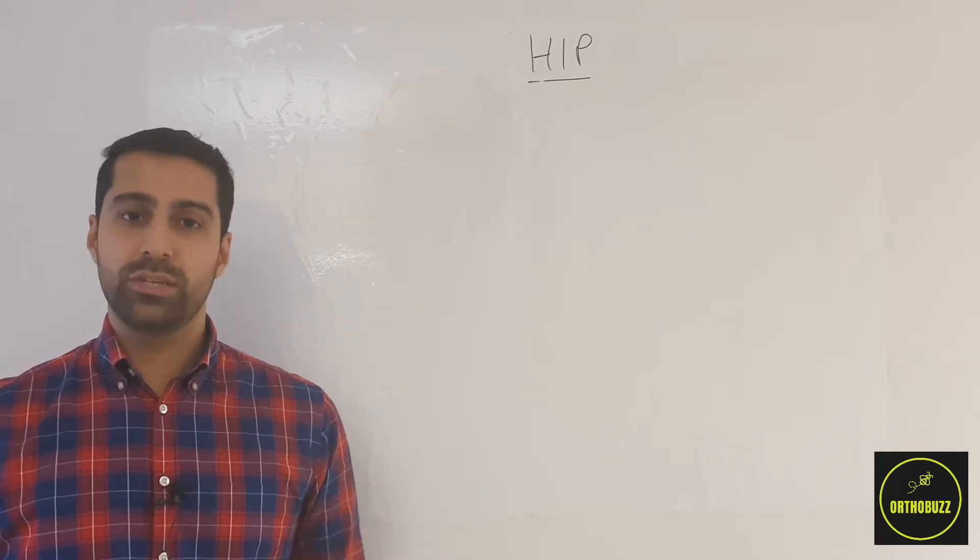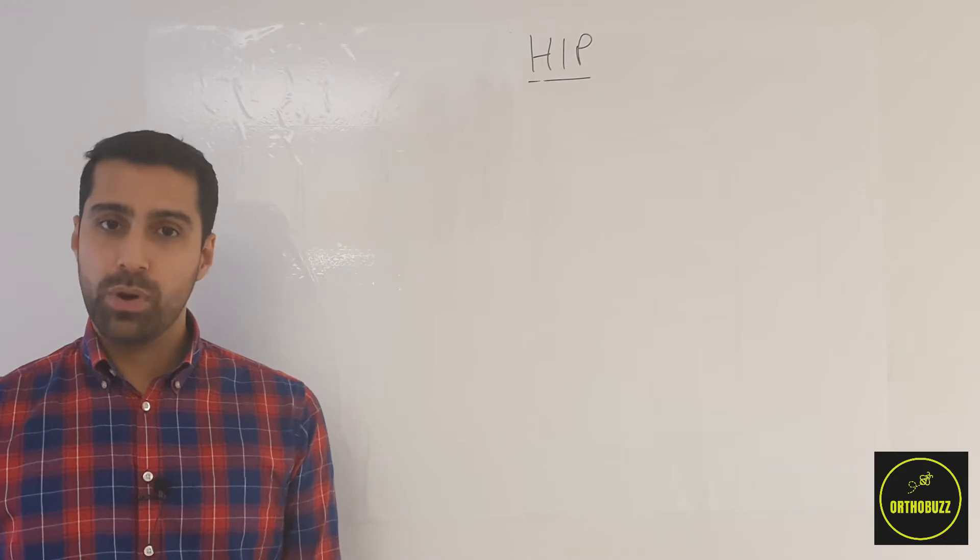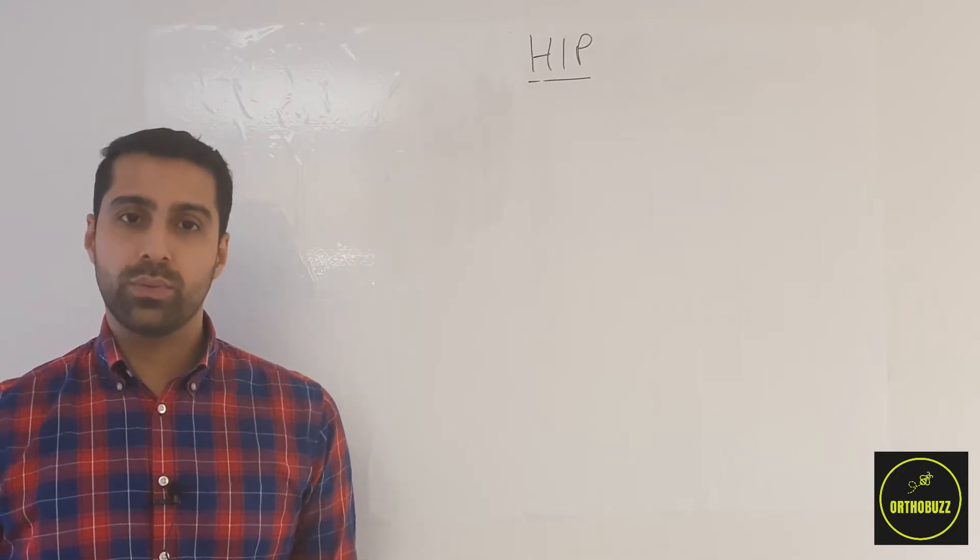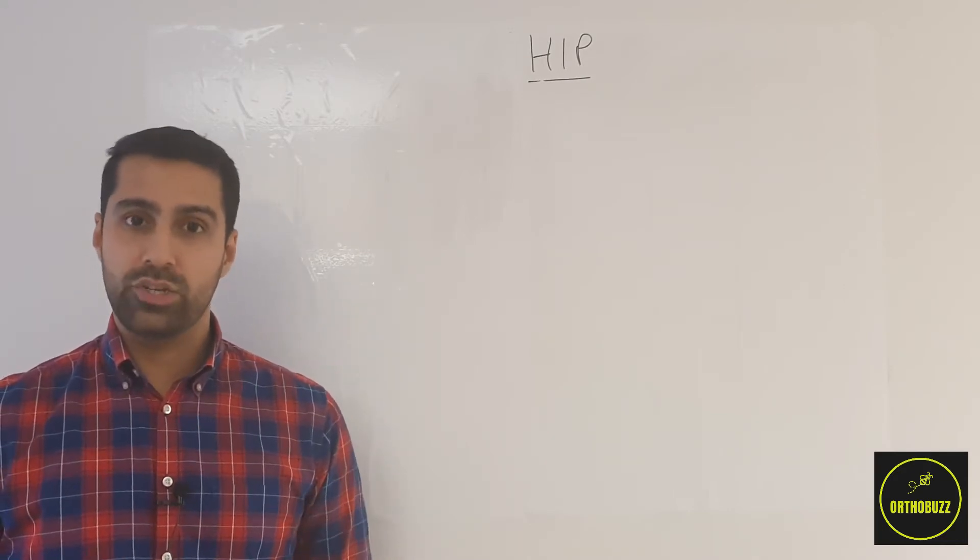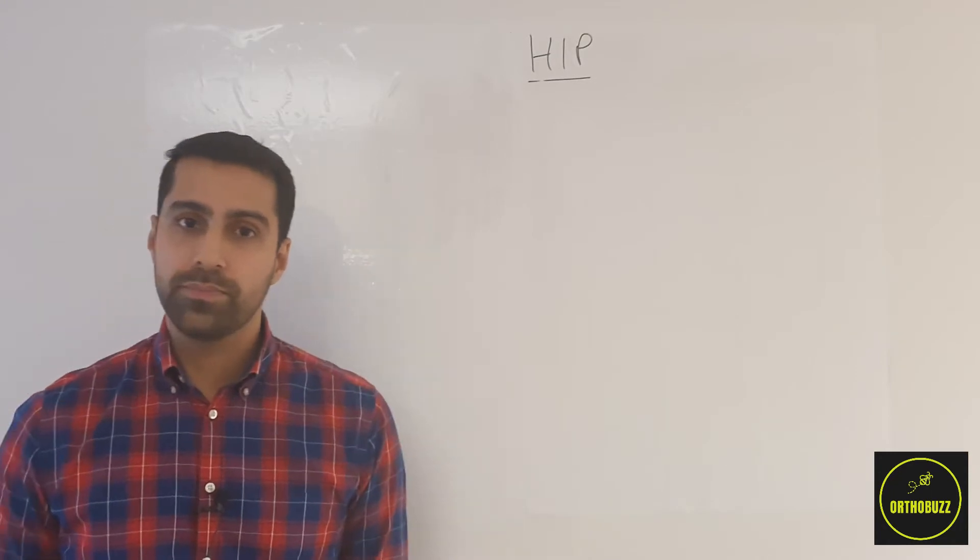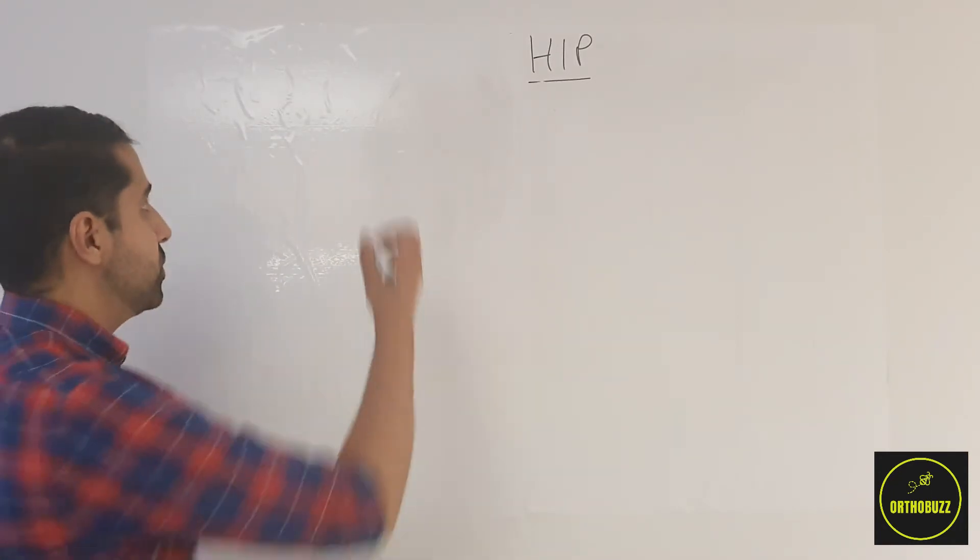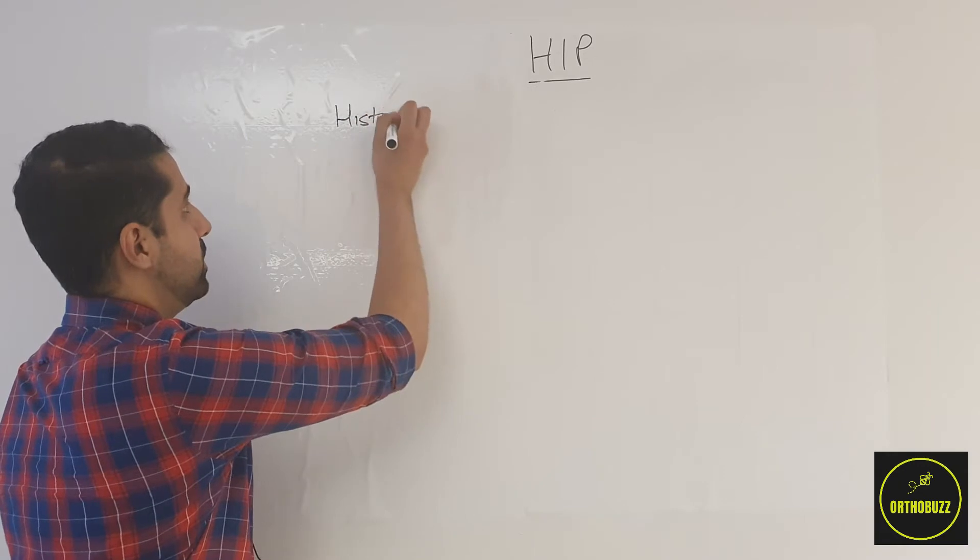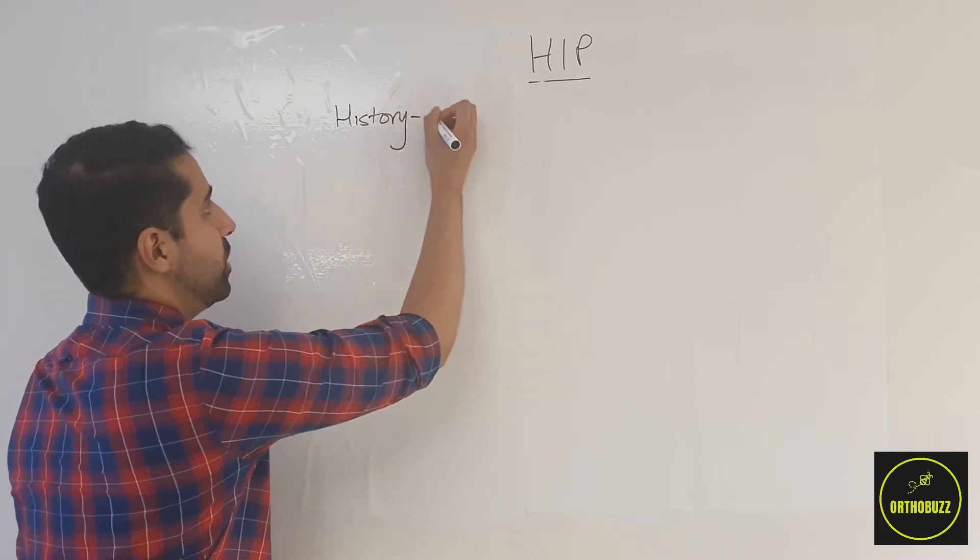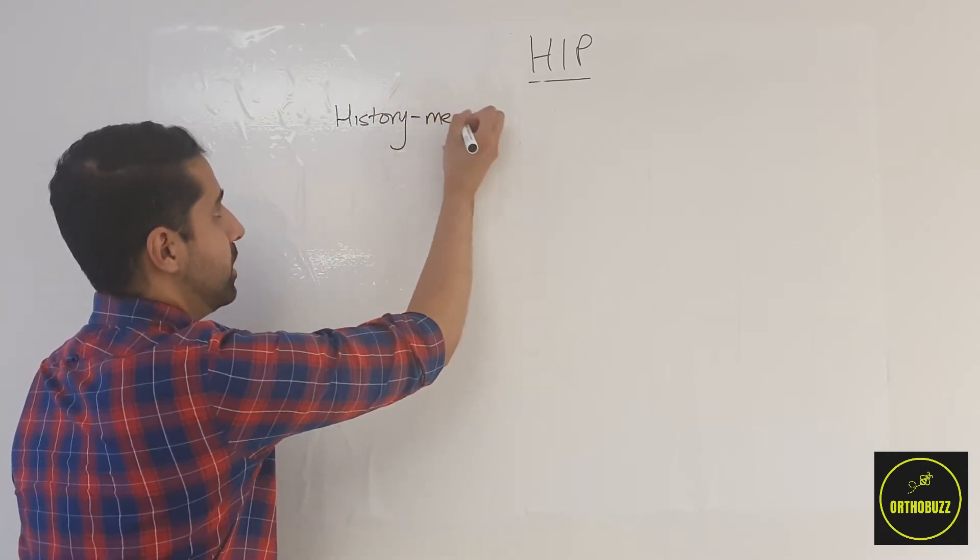The carers state that she has Alzheimer's disease. You're the emergency department SHO who's been tasked with going to see and assess the patient. So how are you going to start? Well, as always you're going to start with a history, and in addition to taking a normal history, you're going to be focusing on a few areas in particular.